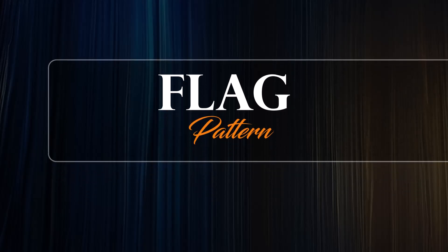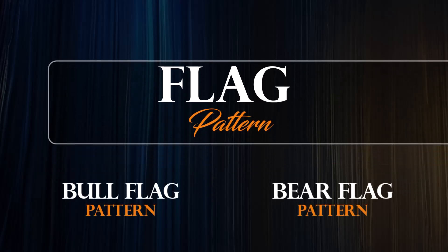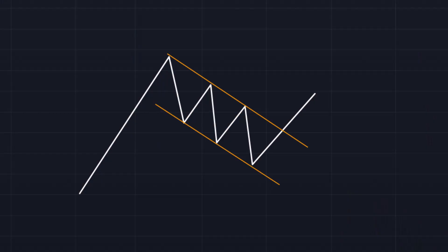Moving on to the next pattern, which is the flag pattern. There are two types: the bull flag and the bear flag. The bull flag pattern is formed when you have your flagpole, which is the moving uptrend. You then have your flag pattern, which is a descending channel. The bull flag has two parallel downward sloping trend lines placed above and below, connecting the lower highs and lower lows. The bull flag signals consolidation and a pullback. Once you have a break above the upper trend line, this signals that the pullback is over and the larger uptrend will continue — meaning new buyers have entered the market creating fresh upward momentum, which pushes price even higher.